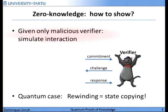Let's jump into the topic and look at how we deal in the classical setting with the zero-knowledge property — specifically, how we prove that a given protocol is zero knowledge. Given only a malicious verifier, we simulate the whole interaction with the prover. We will only consider sigma protocols, where we have three messages: from the prover to verifier a commitment, the verifier answers with a challenge, and then the prover gives a response.